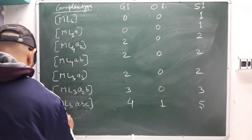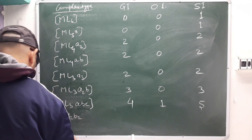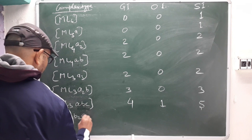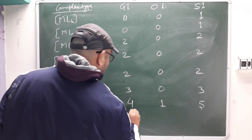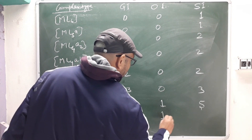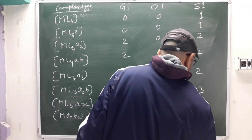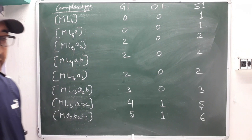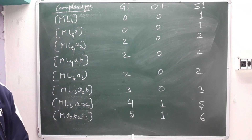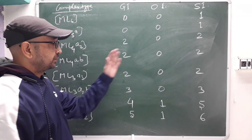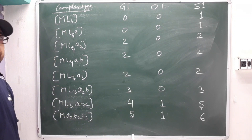For MA₂B₂C₂, geometrical isomers = 5, optical isomers = 1, and total = 6. This completes the octahedral isomerism summary table. Please take a screenshot as I will move out of frame.